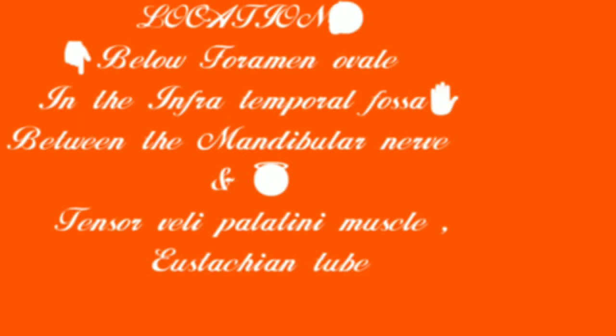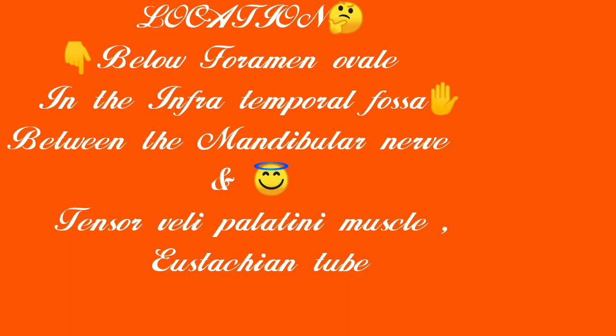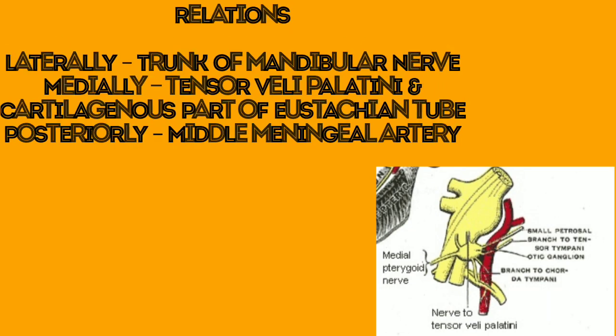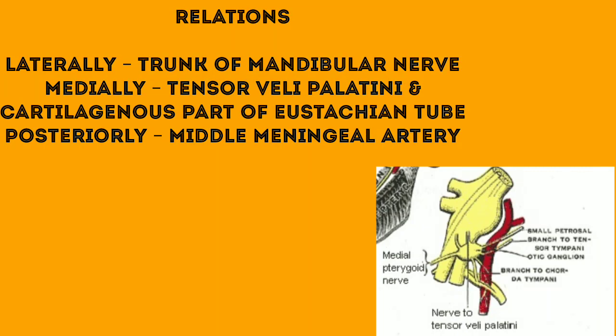The otic ganglion is located below the foramen ovale in the infratemporal fossa, between the mandibular nerve and tensor veli palatini muscle. Laterally it is related to the trunk of the mandibular nerve. Tensor veli palatini and the cartilaginous part of the Eustachian tube form the medial relation. The middle meningeal artery is related posteriorly.